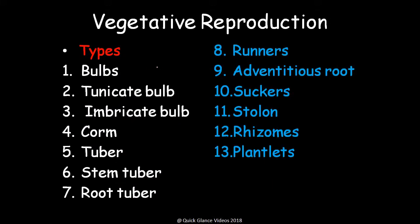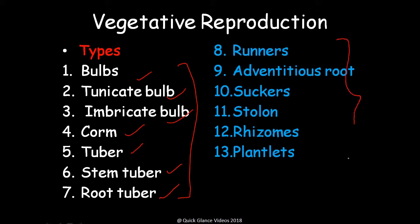There are different types of asexual reproduction. In this first part, we will cover bulbs, tunicated bulbs, imbricate bulbs, corm, tuber, stem tuber, and root tuber. In the second video, we will cover runners, adventitious roots, suckers, stolon, rhizomes, and plantlets — covering the complete topic across two videos.